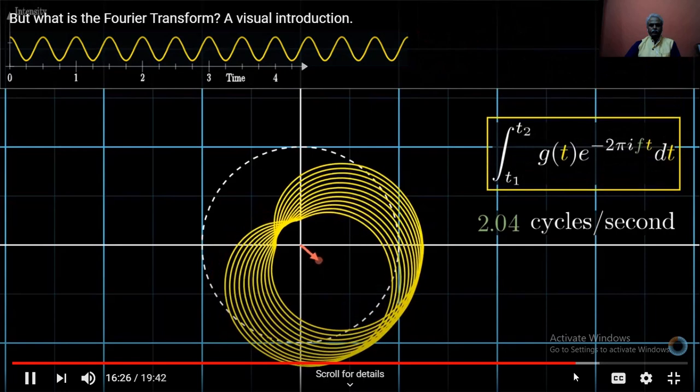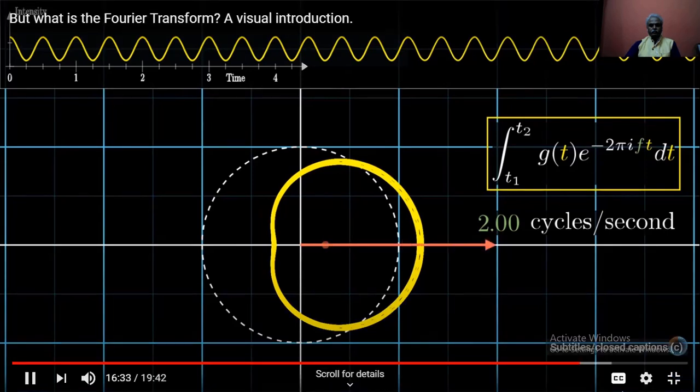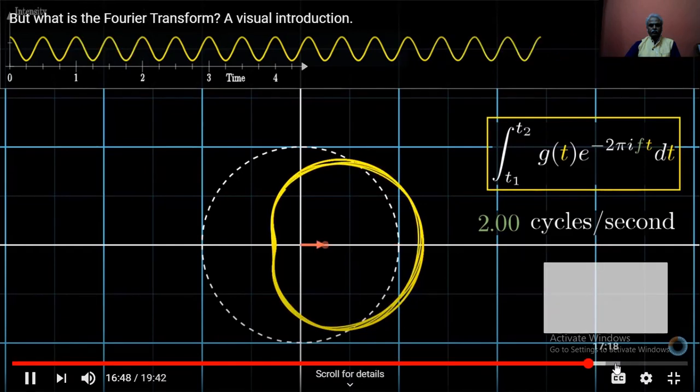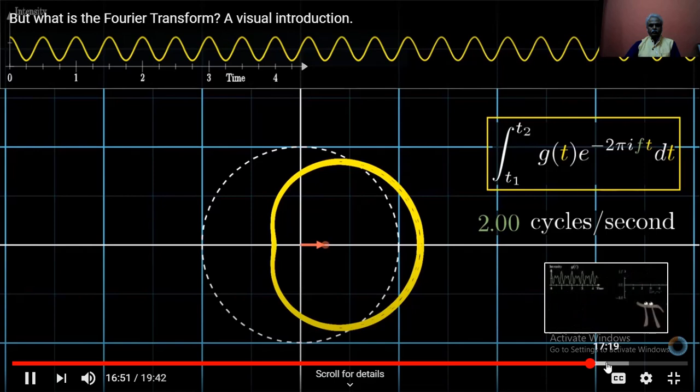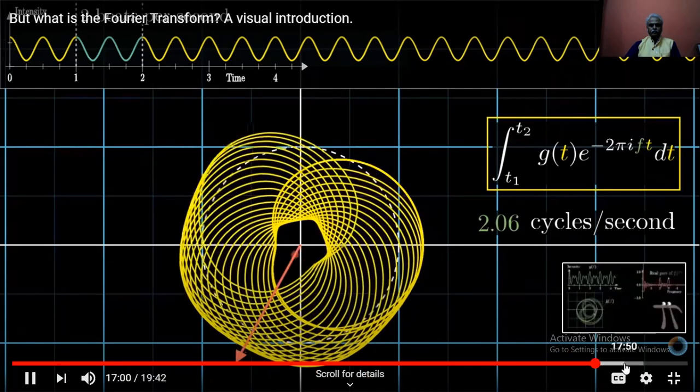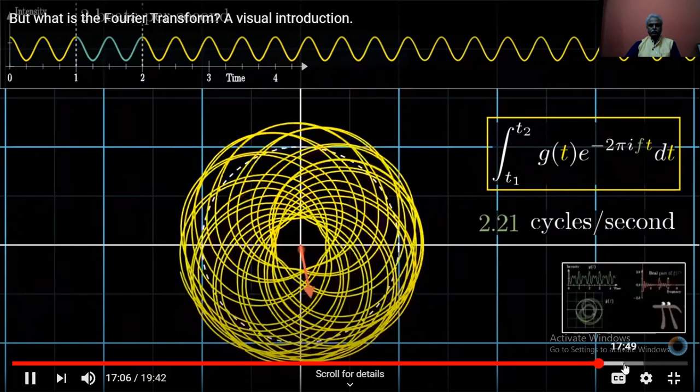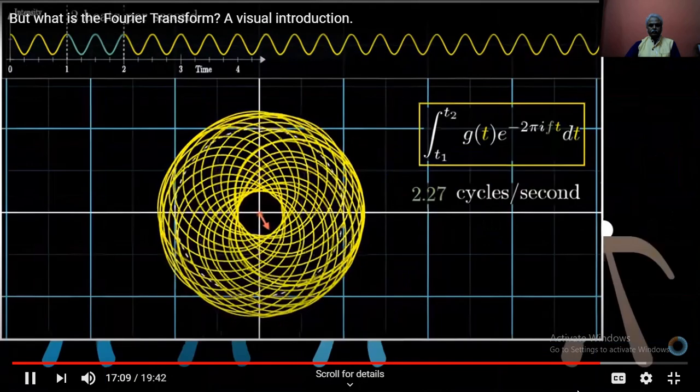What that means is that instead of looking at the center of mass, you would scale it up by some amount. If the portion of the original graph you were using spanned 3 seconds, you would multiply the center of mass by 3. If it was spanning 6 seconds, you would multiply the center of mass by 6. Physically, this has the effect that when a certain frequency persists for a long time, then the magnitude of the Fourier Transform at that frequency is scaled up more and more.